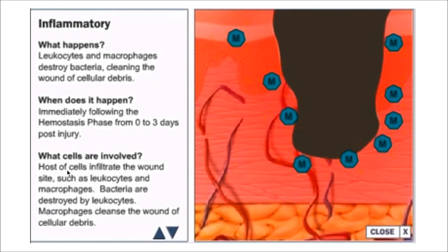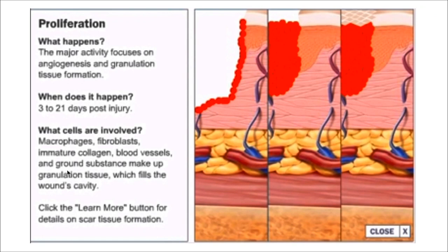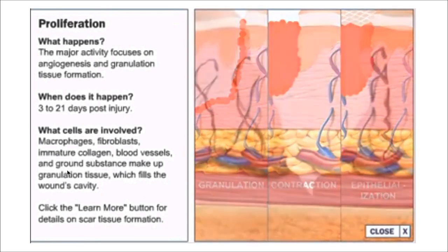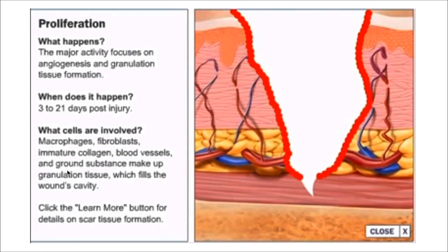Scar tissue formation is characterized by three distinct phases: granulation, contraction, and epithelialization. In an open wound, granulation tissue — red, beefy, shiny tissue with a granular appearance — is generated. This tissue consists of fibroblasts, capillaries, and neutrophils. As this tissue proliferates, fibroblasts produce collagen, giving the tissue strength and structure. As the wound fills with granulation tissue, its margins contract and pull together, decreasing the size of the wound.